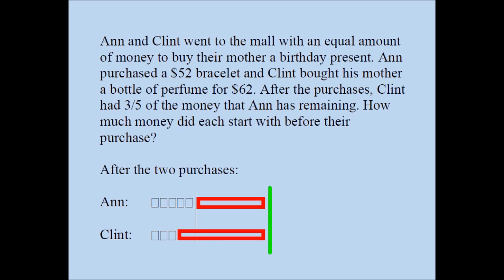What does that mean? That means these two boxes must be equal to $10, and each box therefore must be equal to $5. So Ann must have had 5 times $5, which is $25 left. And Clint must have had $15 left.